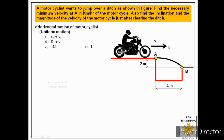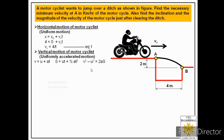Now we consider the vertical motion of the motorcyclist, which is uniformly accelerated motion. Three equations are applicable: v = u + at; s = ut + ½at²; and v² − u² = 2as. The first and last equations both involve the final velocity in the y direction, which is unknown, so we cannot use them. Therefore we use the second equation: s = ut + ½at².